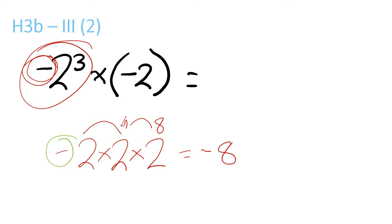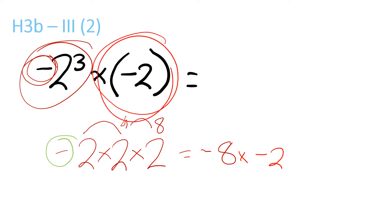But you still got to do minus 8 times minus 2, because of this one here. So it is equal to 16 again, because there are 2 minuses so it's a plus. And the 8 times 2 is 16.